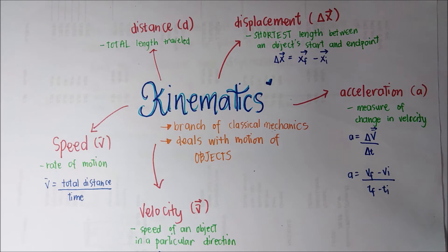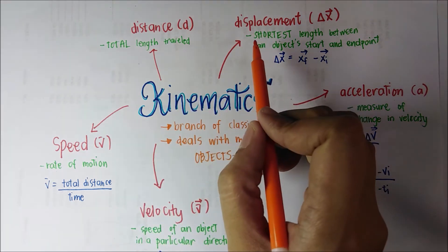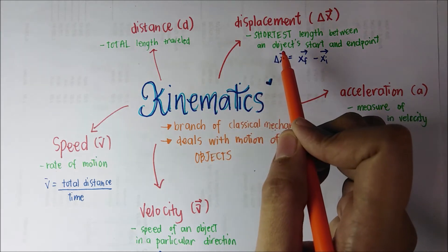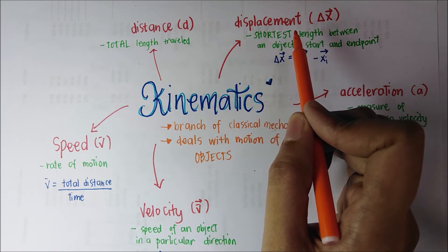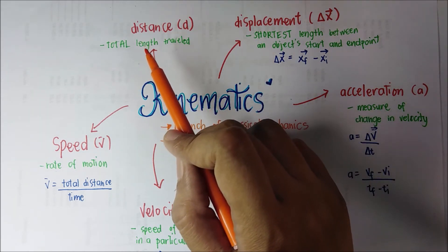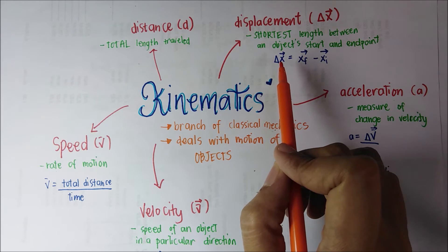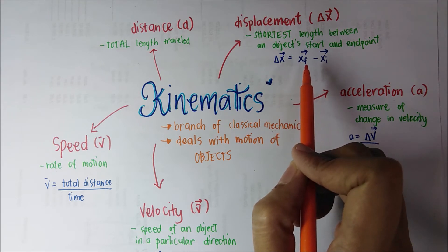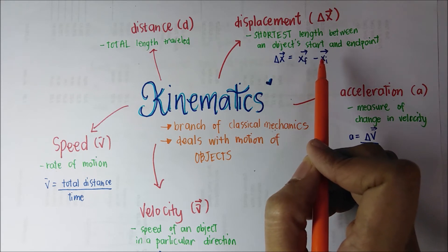Let's go first to distance. Distance refers to the total length traveled by an object, while displacement is the shortest length between an object's start and end point. These two are basically the same; however, displacement includes the direction of the object. For displacement, we use the formula delta x, which means a change in position: delta x equals x sub f, the final position, minus x sub i, the initial position.